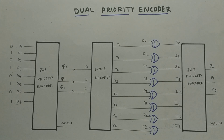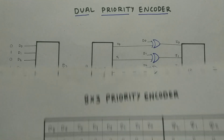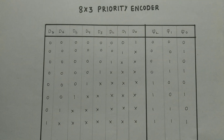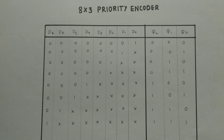So what's a dual priority encoder? A normal priority encoder encodes an n-bit value into log base 2 of n. As you can see here, this is a truth table of a normal priority encoder which has MSB bit priority — MSB bit priority, not LSB bit.